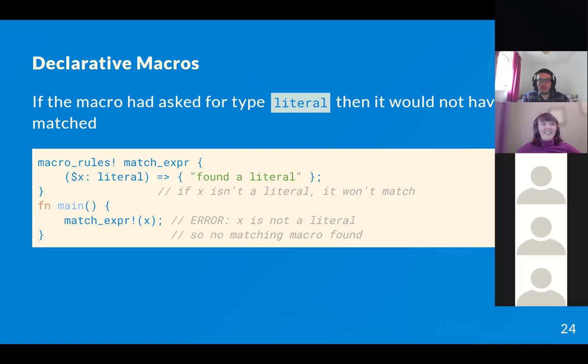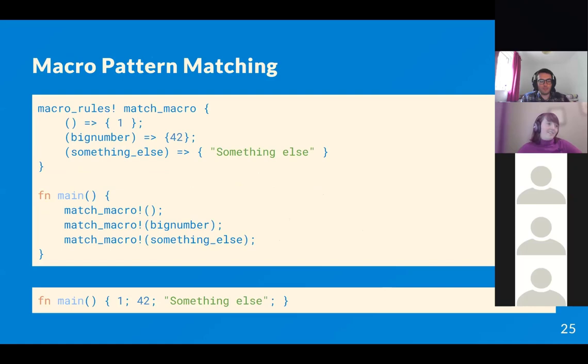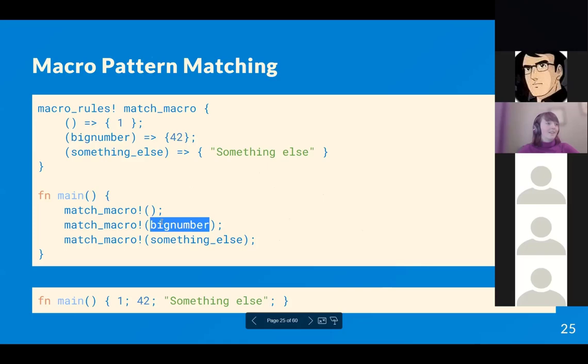If you specify a capture must be a literal, an undefined identifier won't match — the compiler knows it's not a literal, even if it doesn't know what it is. You can also match on specific literal text, such as the text 'big number', without capturing a general identifier, and then expand that to return 42 or whatever value you want.